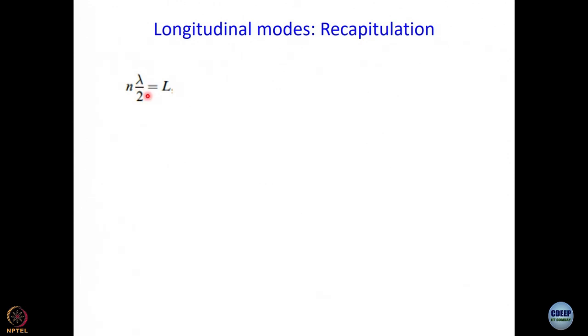There can be many such modes in the laser. As we have discussed earlier, we are not really dealing with n equal to 1, 2, 3. We are dealing with n equal to very large numbers, 10 to the power 6, 10 to the power 4. So wavelengths of modes that are adjacent to each other do not really vary too much.